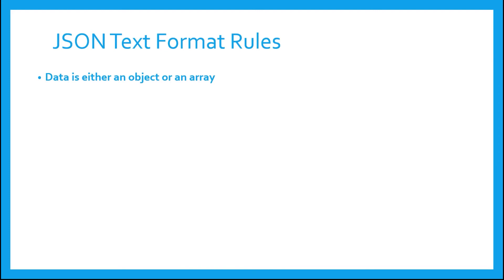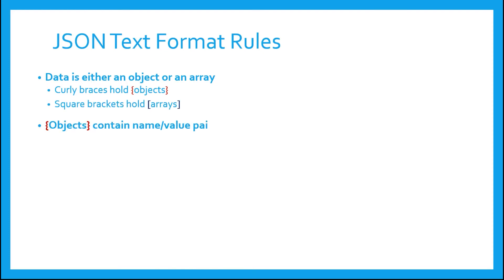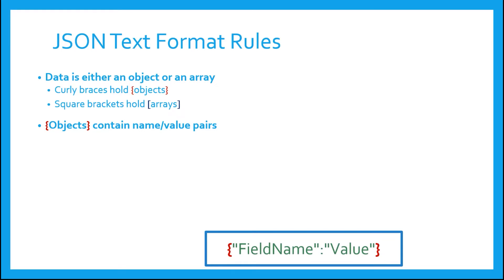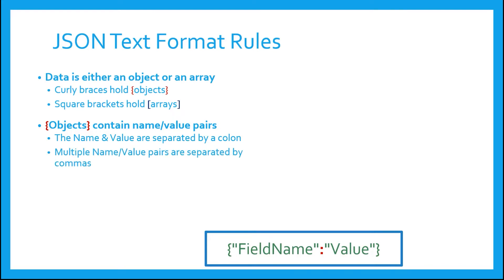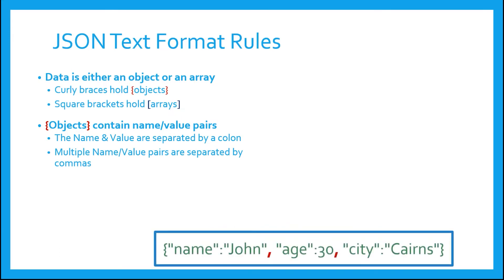All JSON text data is either an object or an array. Curly braces hold objects; square brackets hold arrays. JSON objects contain name-value pairs. Name-value pairs are separated by a colon, here highlighted in red. Objects can contain multiple name-value pairs, and these are separated by commas. This object contains three name-value pairs.